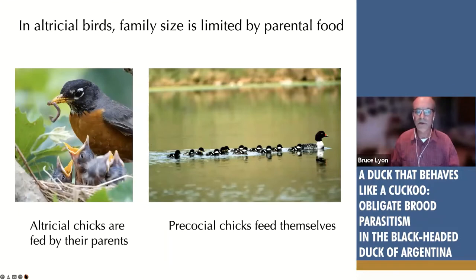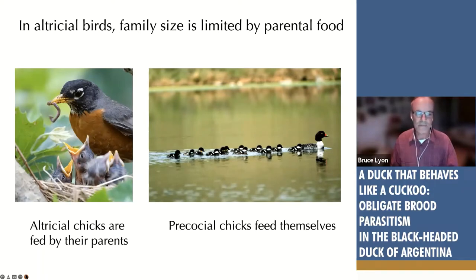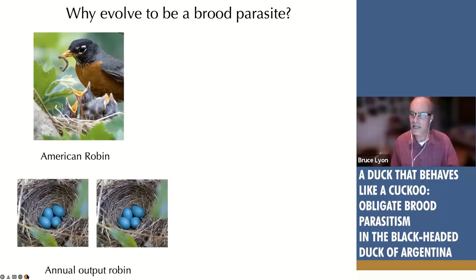This difference in how much babies require food from parents has enormous implications for why parasitism evolves. In altricial birds like robins, babies are fed by their parents for several weeks — all nutrition comes from the parents. In contrast, precocial chicks like goldeneyes feed themselves; what they depend on their mother for is perhaps warmth and warning about predators.